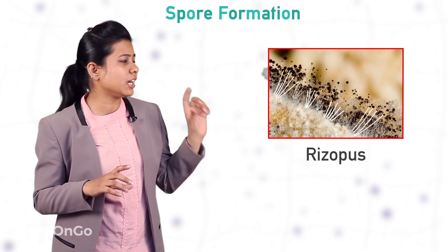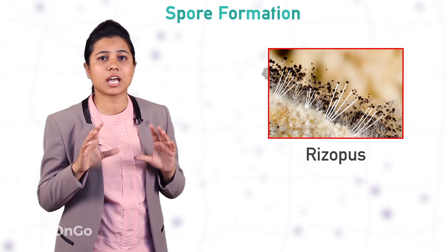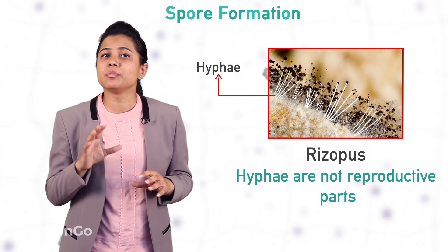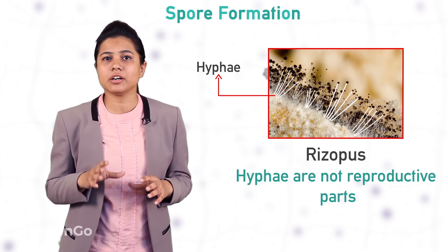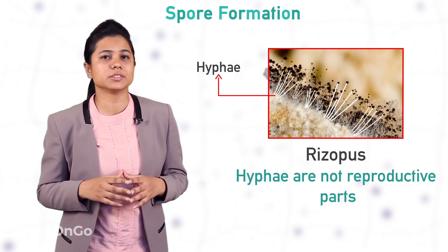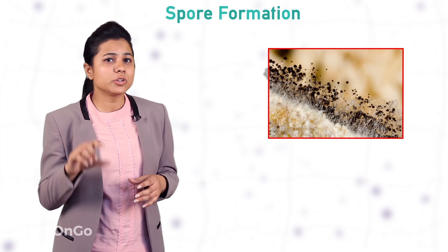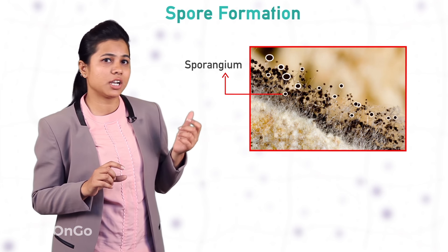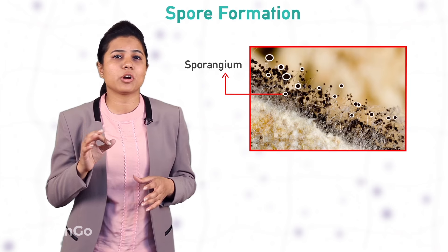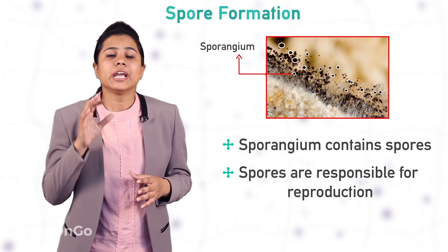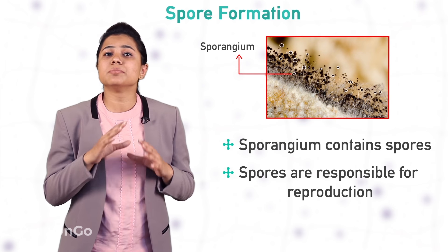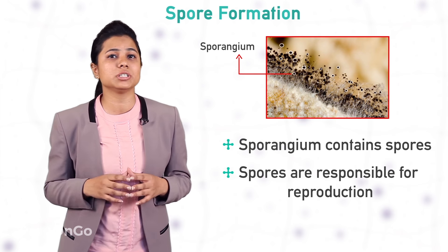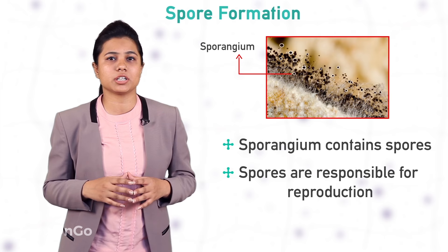These fine thread-like projections are hyphae, and they are not a reproductive part of this fungus. You can also see a knob-like structure called the sporangium. It contains minute spores which are responsible for reproduction.